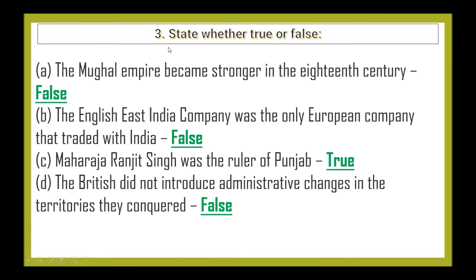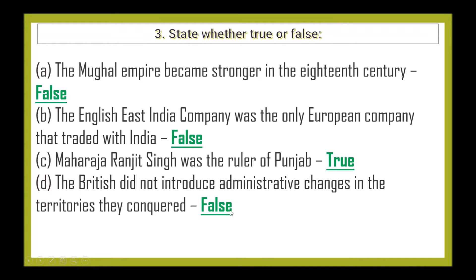The next question is State Whether True or False. The Mughal Empire became stronger in the 18th century — False. The English East India Company was the only European company that traded with India — False. Maharaja Ranjit Singh was the ruler of Punjab — True. The British did not introduce administrative changes in the territories they conquered — False.